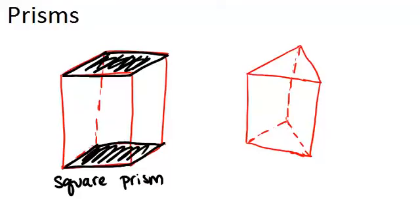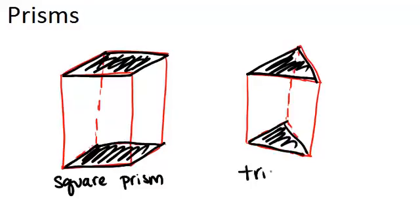Since squares are rectangles. Now with the one on the right, it is also a prism because it has two parallel bases, which are each triangles. So this would be called a triangular prism.